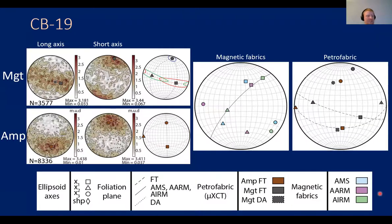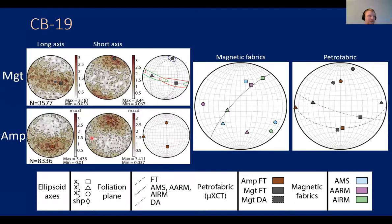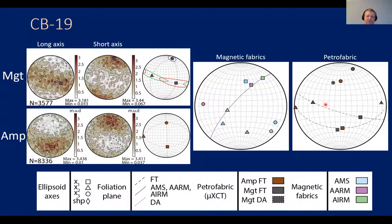Sample CB19 is more complex: the magnetite long-axis shape fabric shows an east–west girdle distribution, while the amphibole shape fabric shows a cluster in the southern hemisphere. The magnetic fabrics plot in the northern hemisphere, appearing inverse relative to both the shape fabrics and the magnetite distribution anisotropy. So in this sample the magnetic fabrics are inverse relative to both shape and distribution fabrics.